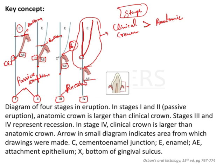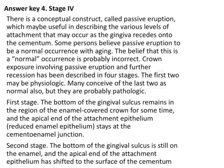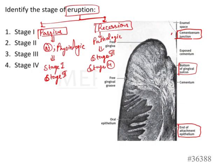These are the various questions that can be framed on this concept. To identify the stage of eruption in the given case: the CEJ is visible, the bottom of the gingival sulcus is apical to the CEJ, and the end of the attachment epithelium is also apical to the CEJ. That's why this is a case of recession — it is pathologic and the answer is Stage 4.